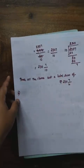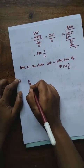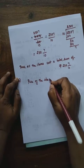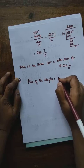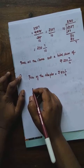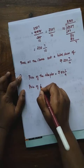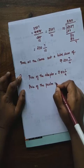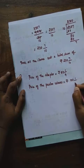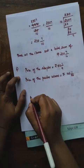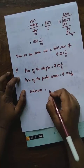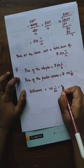The price of the stabler is rupees 51 and 1/4, and the price of poster colors is rupees 101 and 1/20. We are going to find the difference. So: difference = 101 and 1/20 minus 51 and 1/4.